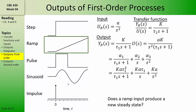How about a ramp input to a first-order process? The ramp function is represented by a over s squared in the Laplace domain, where a is the slope of the ramp. Multiplying by the first-order transfer function gives ak over s squared times (tau s plus one). The partial fraction expansion gives three linearly independent terms: the first inverts as an exponential decay, the second as a step, and the third as a ramp. So the output is the sum of an exponential decay, a step, and a ramp, and therefore cannot reach a new steady state because the ramp term continuously increases with time — which makes sense since the input also continuously increases with time.